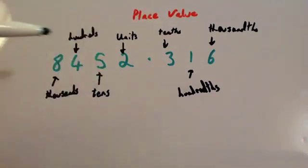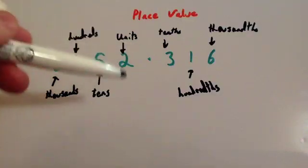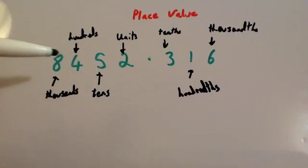Let's look at the place value. First of all you've got units before the decimal point, then you've got tens, then you've got hundreds, then you've got thousands.